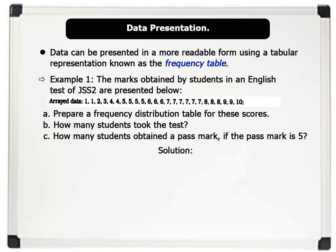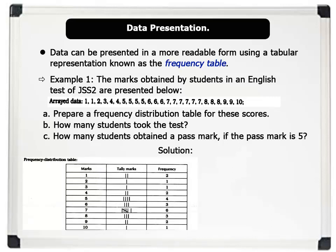Solution. First, we set up a frequency distribution table as shown below. Notice the marks and frequency columns. According to the table, 2 students scored 1 mark. 1 student scored 2. 1 student scored 3. 2 students scored 4. 4 students scored 5.